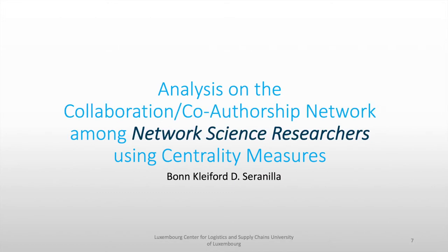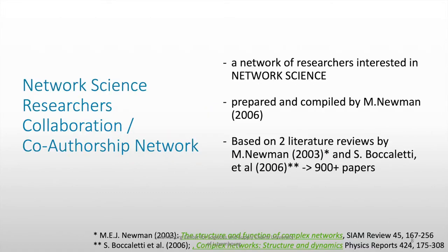Now let's go to network science researchers. The network science researchers collaboration or co-authorship network is a network of researchers interested in network science. It was prepared and compiled by Mark Newman in 2006, and it was based on two literature reviews written by Mark Newman in 2003 and Stephanie Boccaletti in 2006. These two literature reviews sum up to around 900 plus papers, and Mark Newman compiled all of the authors and papers into one dataset.